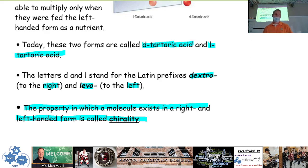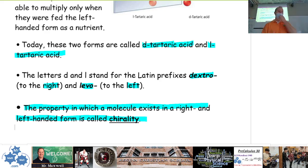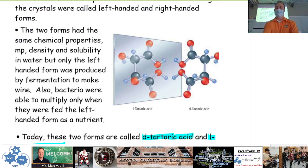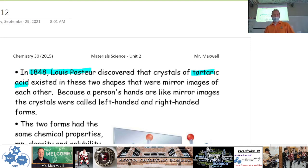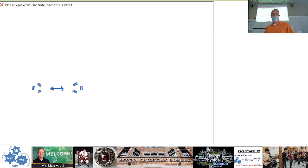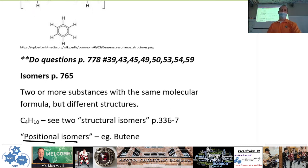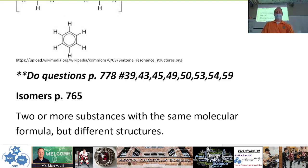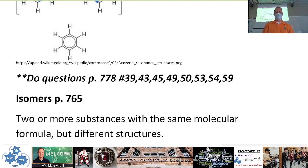The property in which a molecule exists in a right- and left-handed form is called chirality — spelled C-H-I-R-A-L-I-T-Y, pronounced with a 'k' sound, not 'sh.' If you have chiral forms of the same molecule, you have mirror image versions that have mostly the same properties but some very specific differences. Interestingly, in nature only one chiral form is required for many biological processes — it's strange that life depends on only one hand form when random generation would produce both equally. For textbook questions, focus on page 778. That concludes today's lesson.